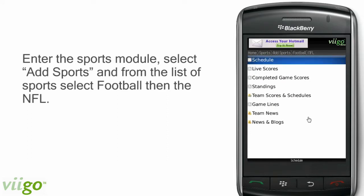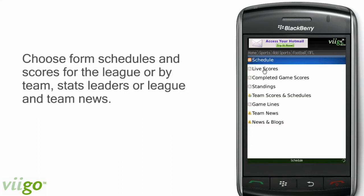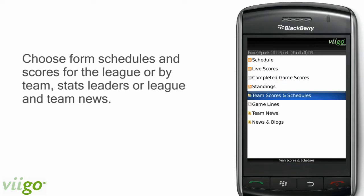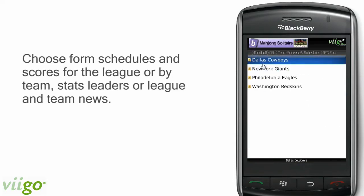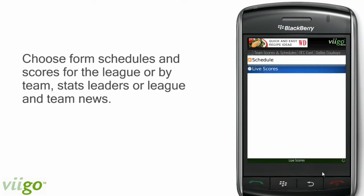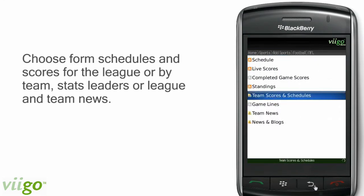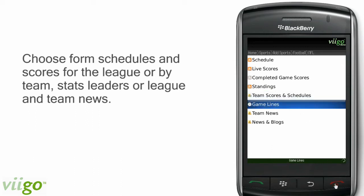At this point, you'll see a list of features you can add. You can see the schedules, live scores, complete game scores, and standings. You can also go in and add your team-specific scores and schedules. And if you want to check out the spreads for the week, you can add the game lines feed as well.